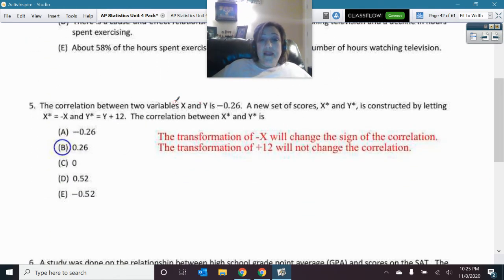Okay, here, this was the correlation rule that the negative had affected it by changing the sign from a negative 0.26 to positive, but the plus 12 did not have an effect. It just shifted the data, did not change the correlation.